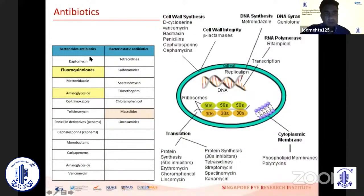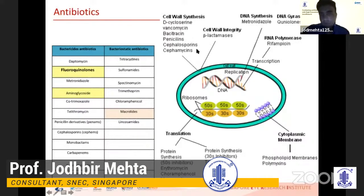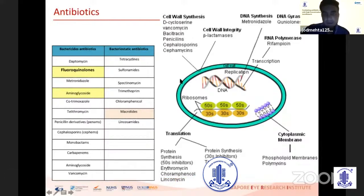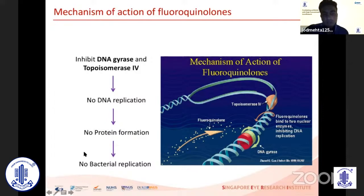We know antibiotics can be divided into two broad types: one is bactericidal and one is bacteriostatic. How they prevent the bacteria from replicating depends on their mechanism of action — either related to function on the cell wall, protein function such as on the ribosomes, or DNA replication. Fluoroquinolones particularly affect DNA gyrase and topoisomerase type 4, inhibiting DNA replication, so there is no subsequent protein formation or bacterial replication.